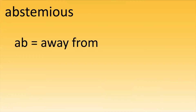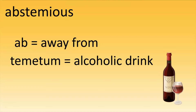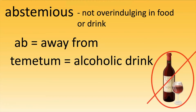Our next word is 'abstemious.' There's our prefix AB, and 'tomatum' is actually an alcoholic drink. Today, this word doesn't mean just staying away from alcoholic drink — it means that you are staying away from overindulging in food or drink. So that is a no to the food and drink.